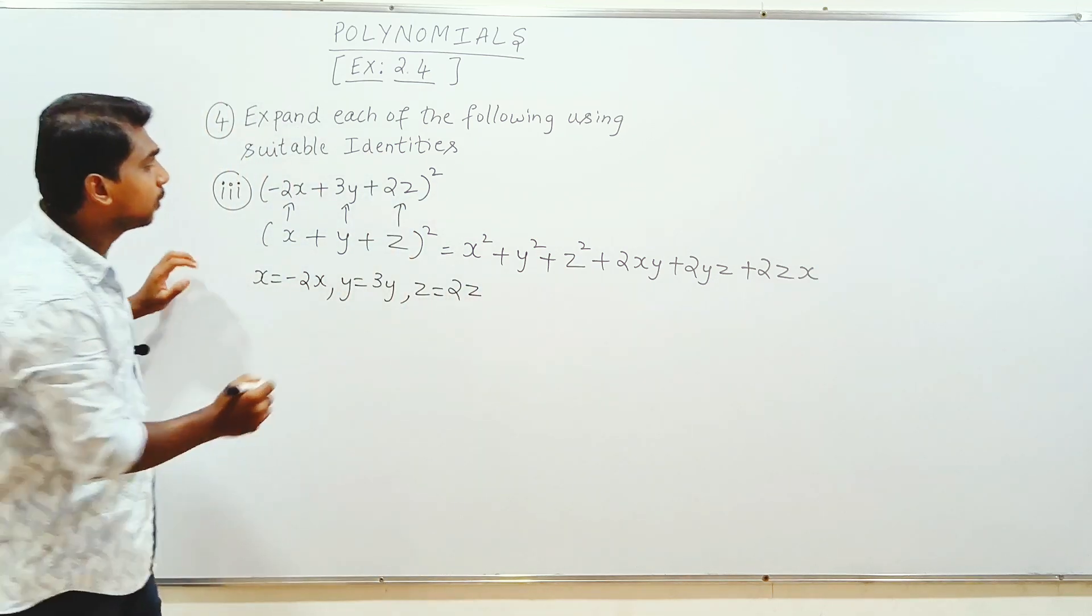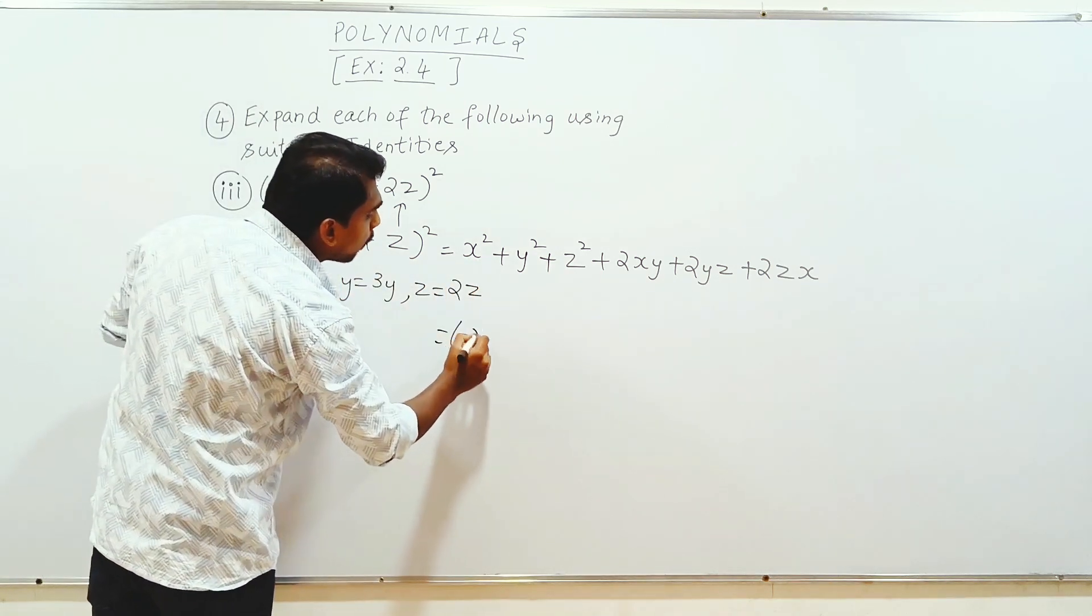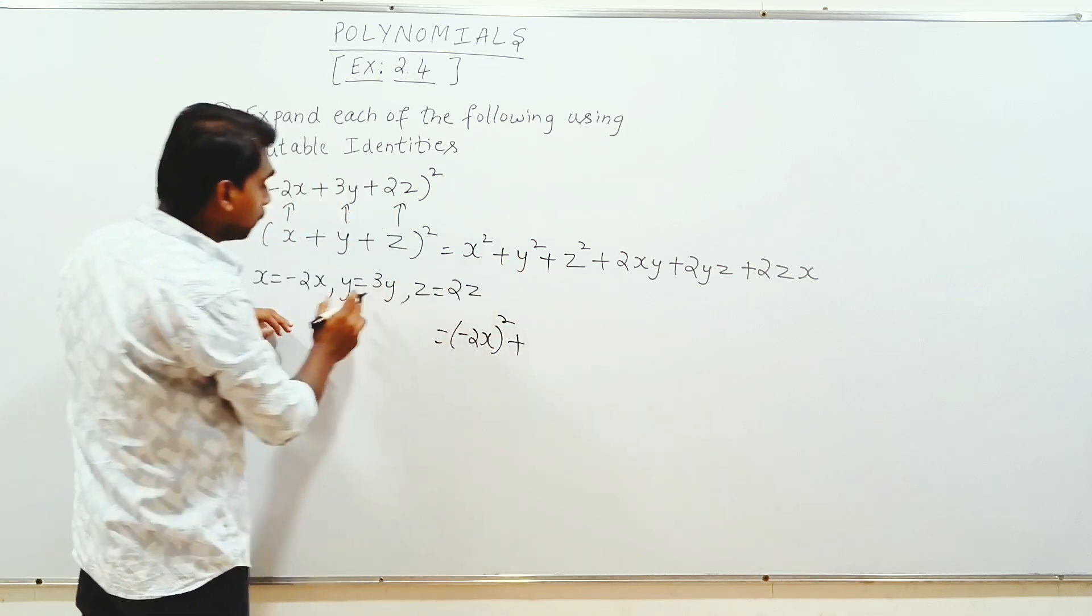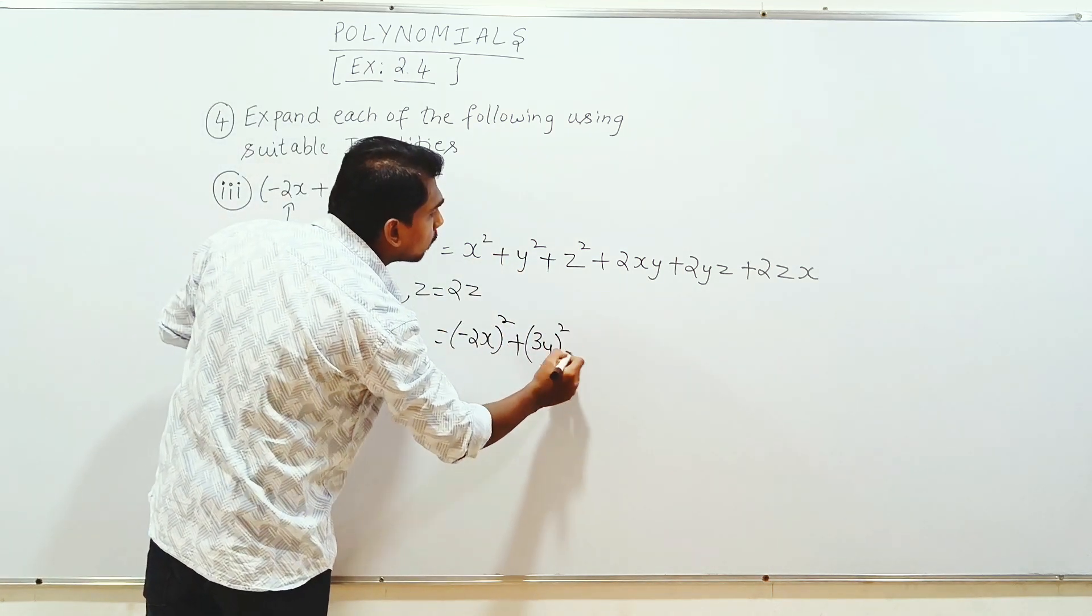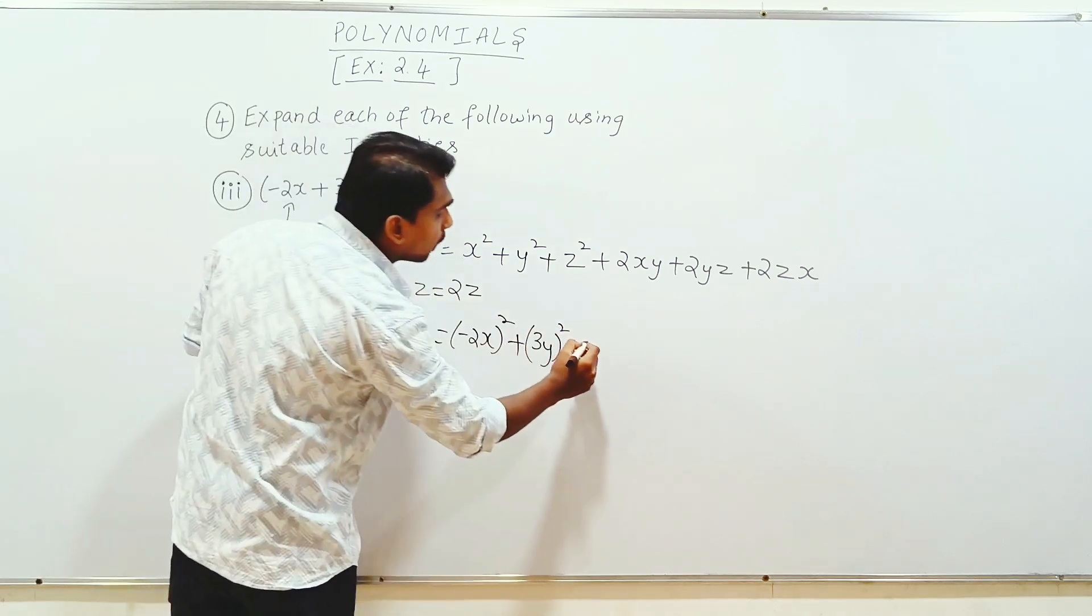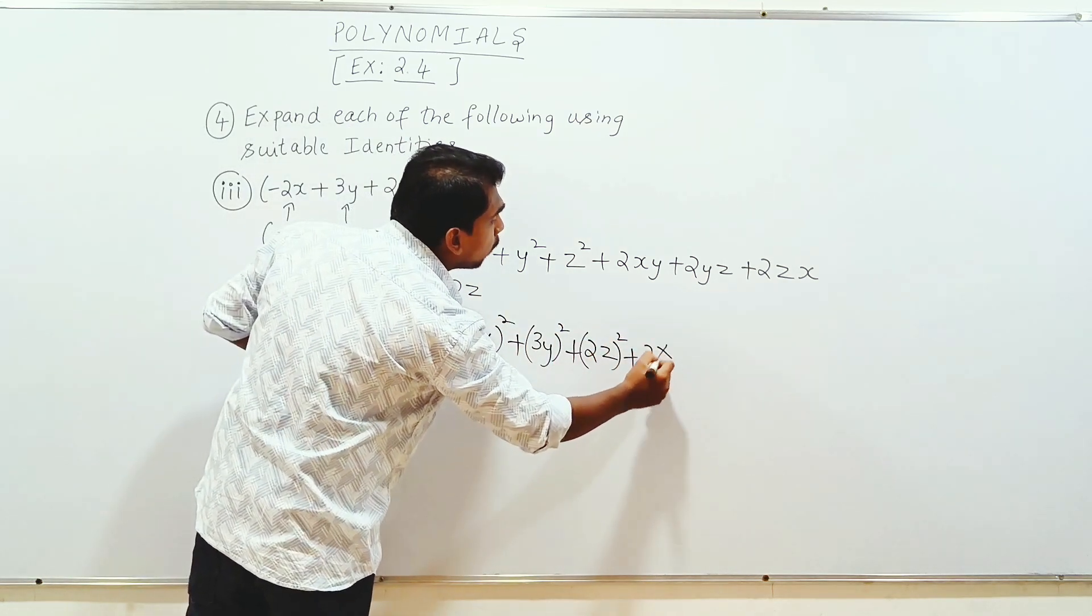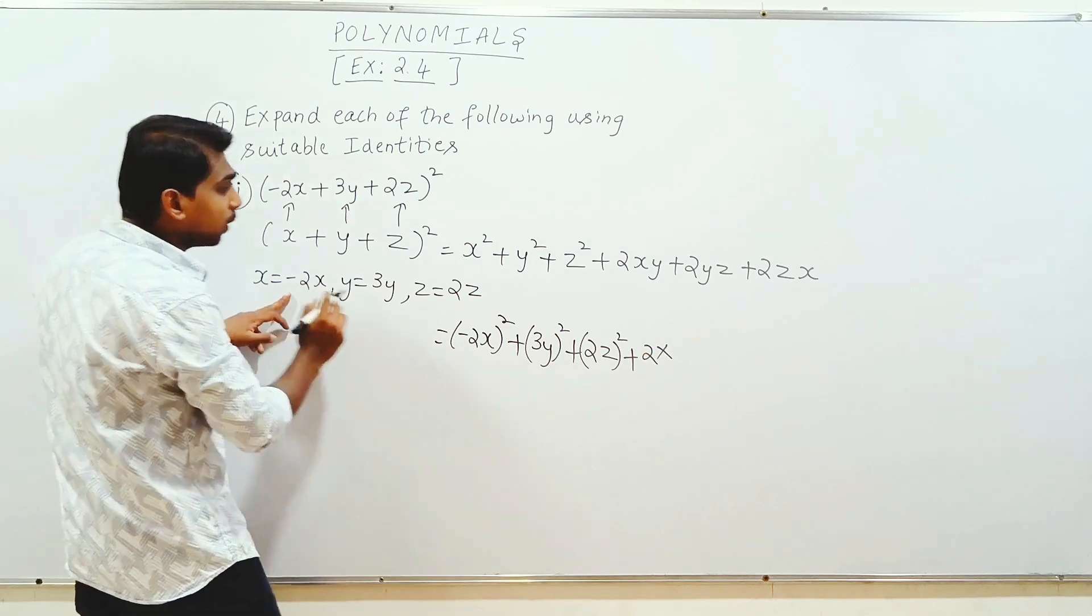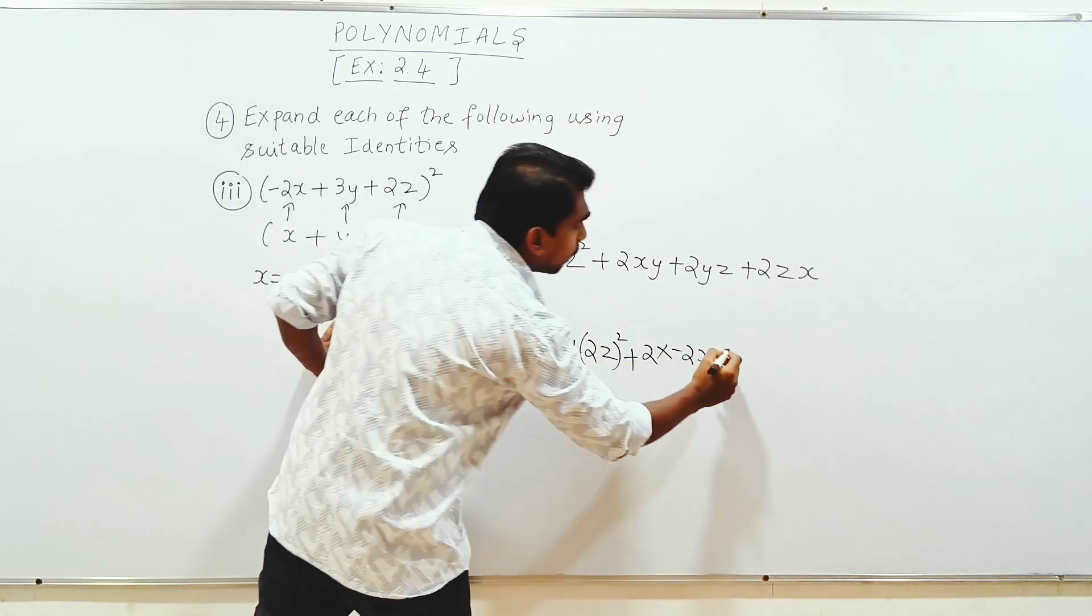This is the formula. x is minus 2x. Minus 2x whole square plus y is 3y. 3y whole square plus z is 2z. 2z whole square plus 2xy. x value minus 2x into y value 3y.